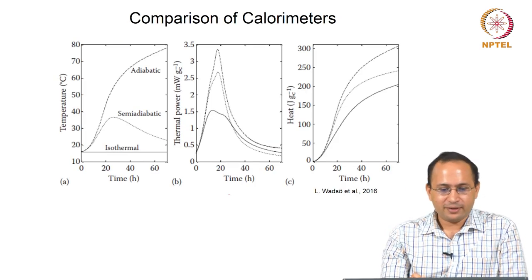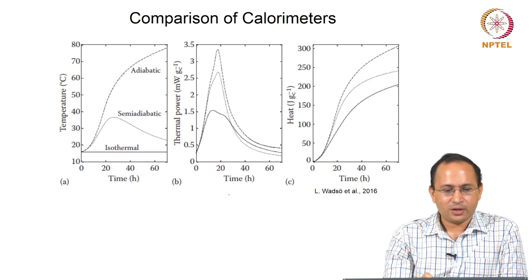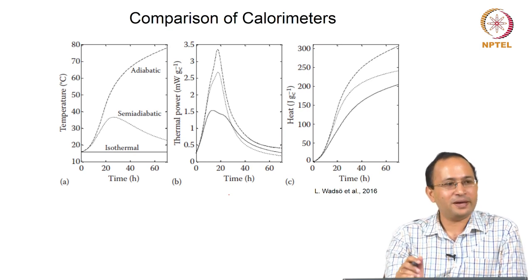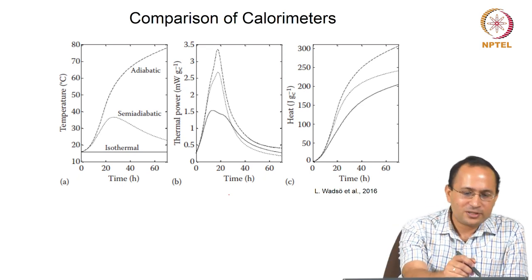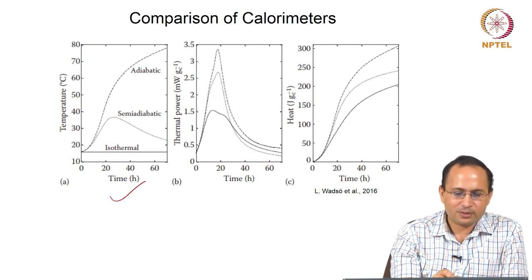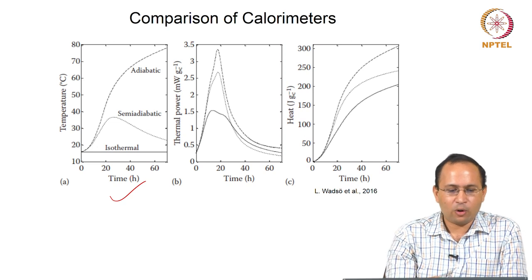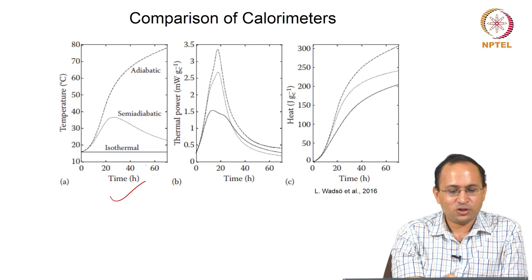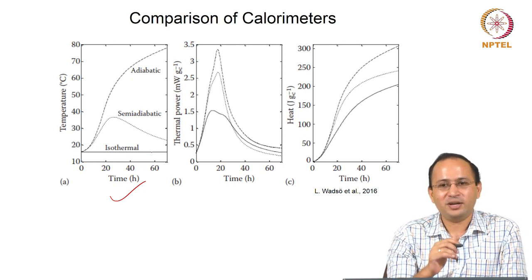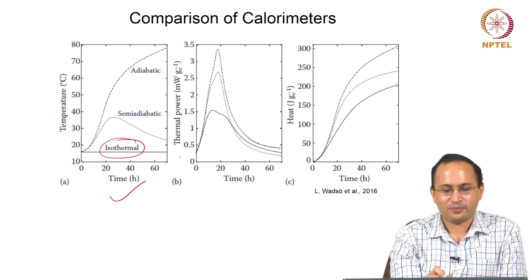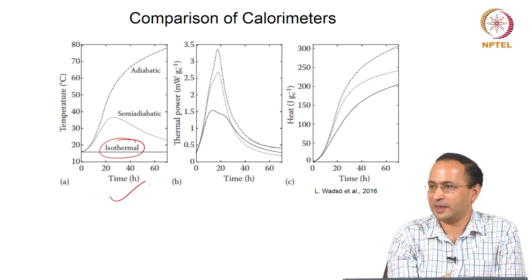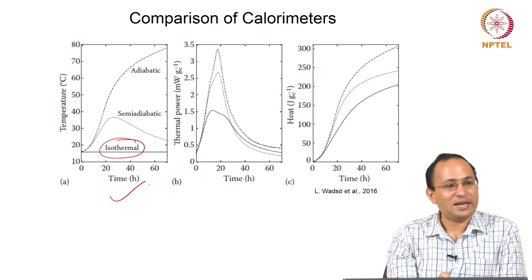So here we stopped yesterday — let us compare three different types of calorimeters: isothermal, adiabatic, and semi-adiabatic. Looking at the first plot of temperature versus time: isothermal obviously gives constant temperature since you are trying to maintain it — in this case around 15 degrees Celsius.